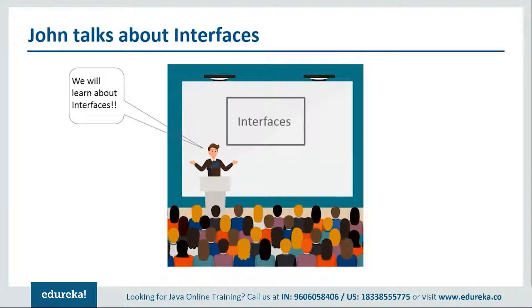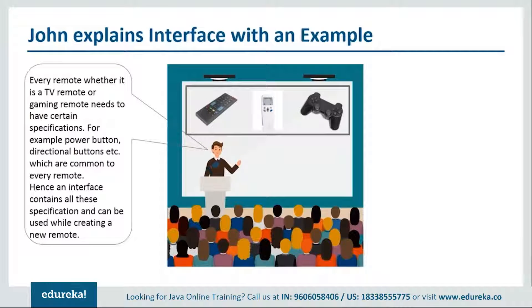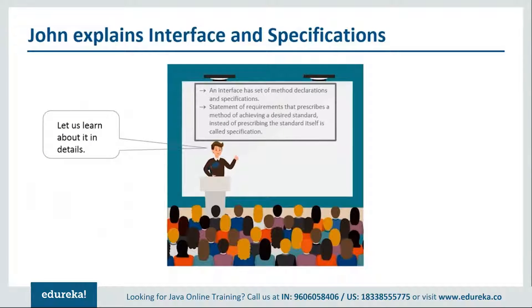The topic John is supposed to discuss is interfaces. He starts with the example of a remote. We have many types of remotes, but when building them there are common specifications — like the power button and navigation keys — that are common to most remotes. Interfaces are similar to these specifications or features that a remote should basically have.